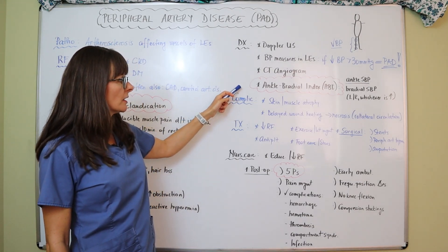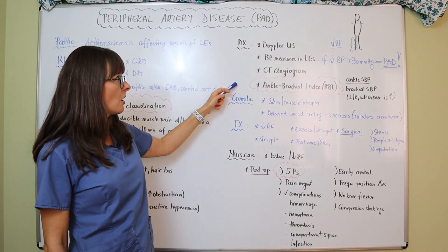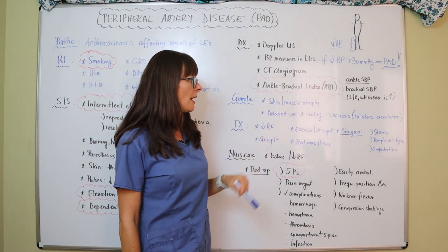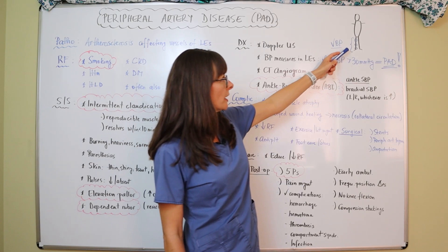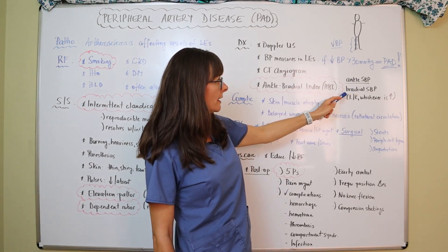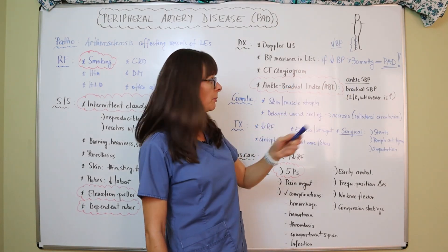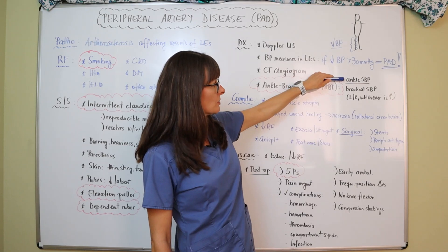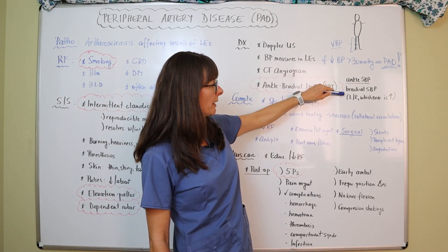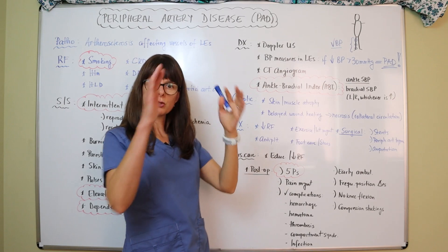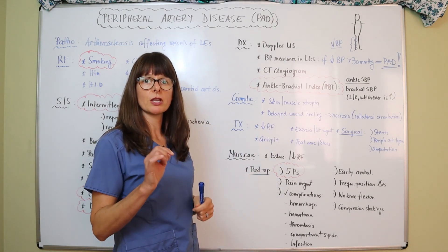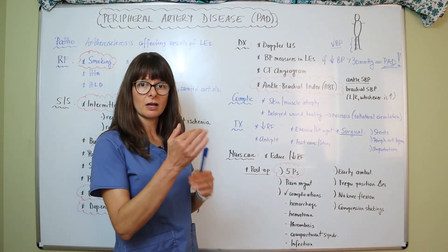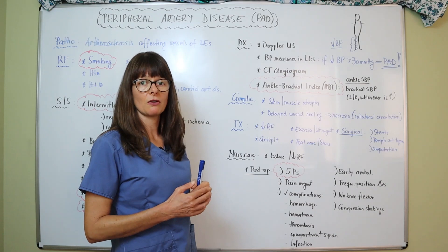Another test highly indicative of PAD is the ankle brachial index, or ABI. We take the systolic blood pressure in the affected extremity at the ankle and divide it by the brachial systolic blood pressure — using whichever arm is higher. Depending on the resulting ratio, a graph or reference sheet is used to determine whether it is diagnostic and to assess the severity of PAD.